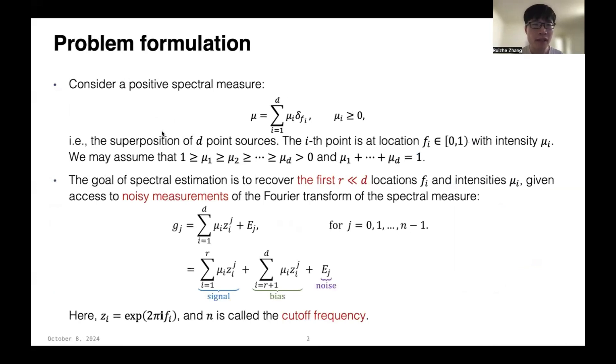More specifically, consider a positive spectral measure defined as the superposition of d point sources. They have locations f_1 to f_d with intensities μ_1 to μ_d. The goal is to recover the first r locations, given access to noisy measurements of the Fourier transform of the spectral measure, which is defined as g_j equals the sum of μ_i times z_i to the power of j, where z_i equals e to the 2πi times f_i.